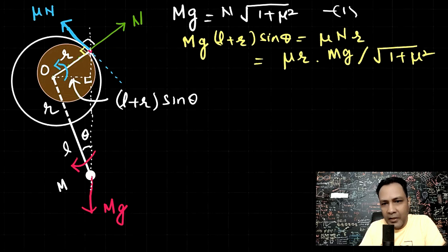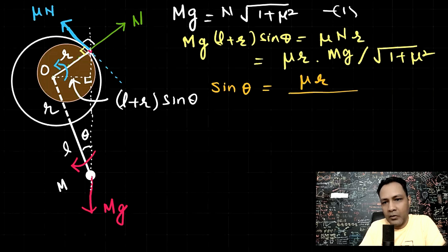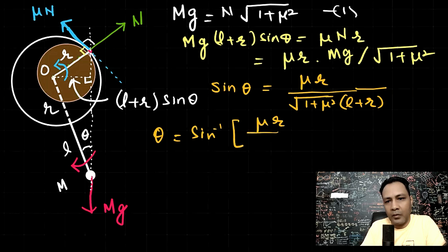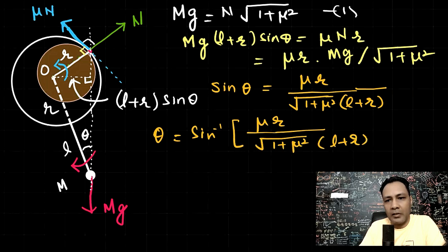Therefore, the equilibrium angle is: theta = arcsin of mu·r divided by [√(1 + mu²)·(l + r)]. And that is our answer.